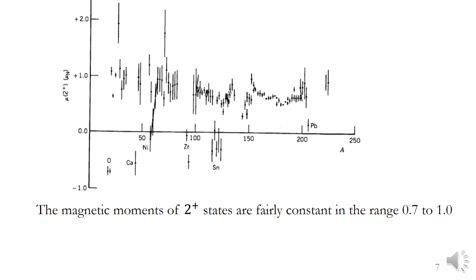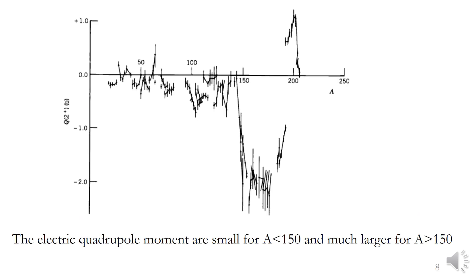The third property: the magnetic moments of these 2+ states are fairly constant in the range 0.7 to 1.0, nearly constant within that range, again excepting the closed shell regions. The fourth property: the electric quadrupole moments are small for A less than 150, and much larger for A greater than 150.